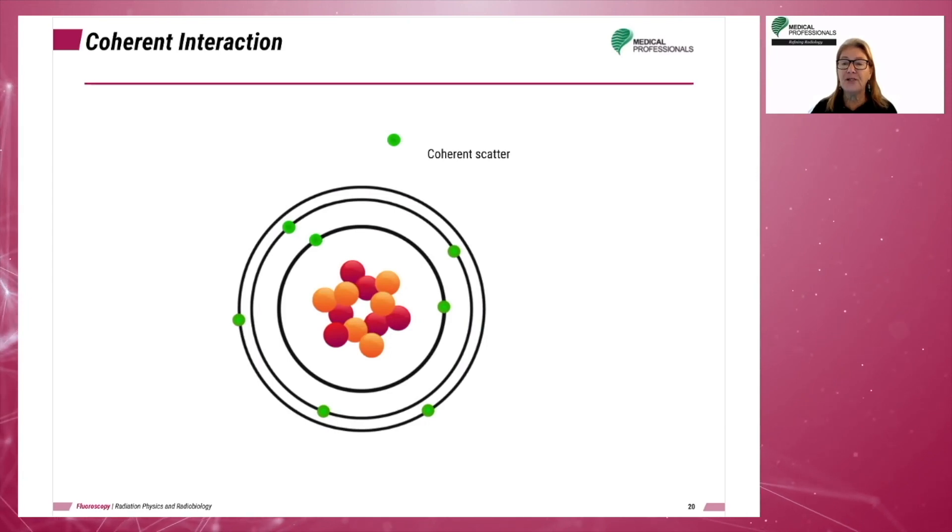Because none of the energy is lost to the atom, the scattered photon has the same energy level as the incident photon. This scattered photon has the ability to interact again and in a different manner if it interacts with a different atom.